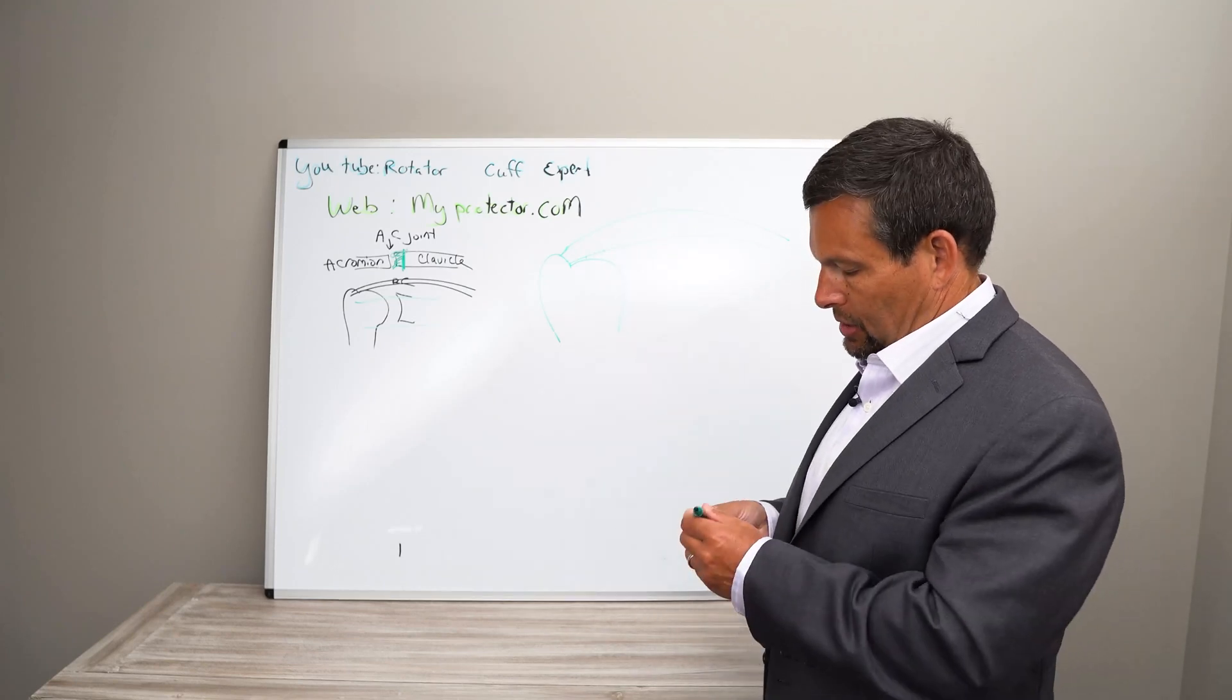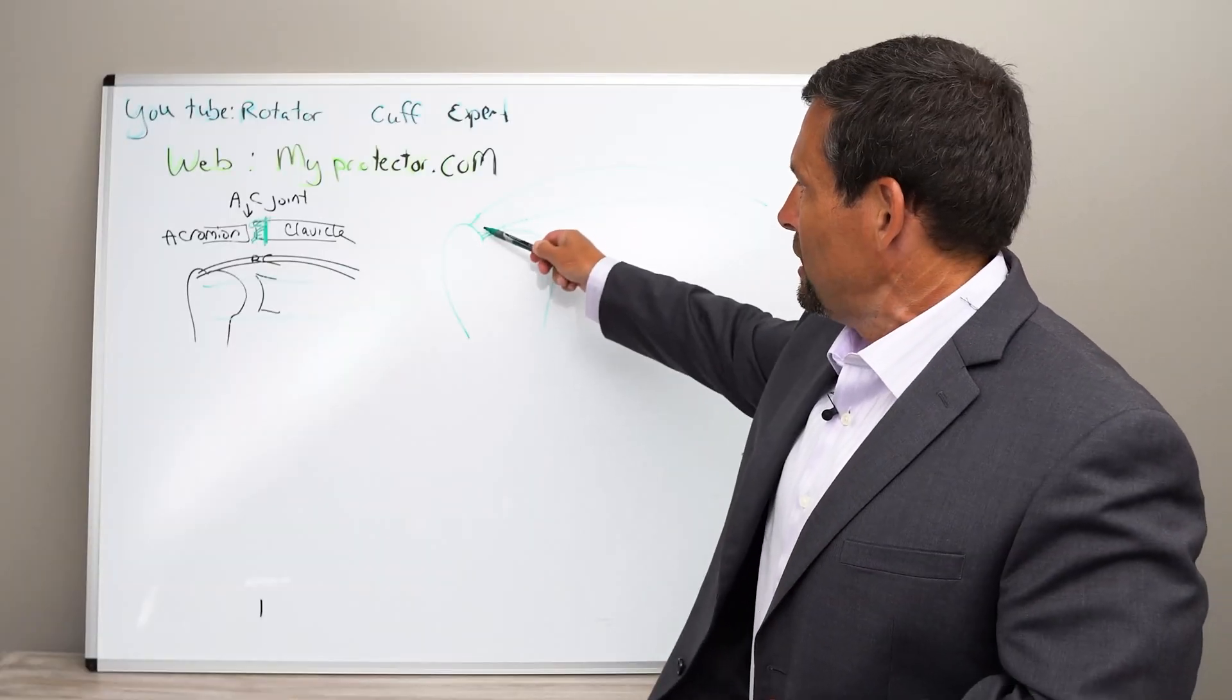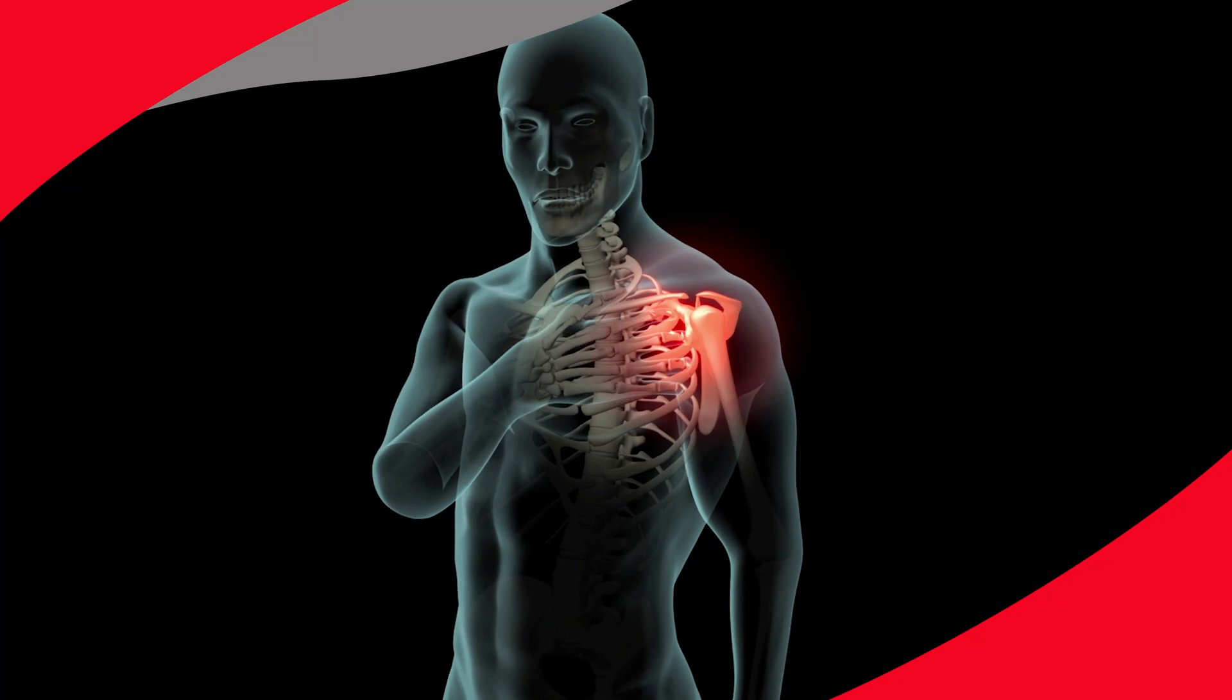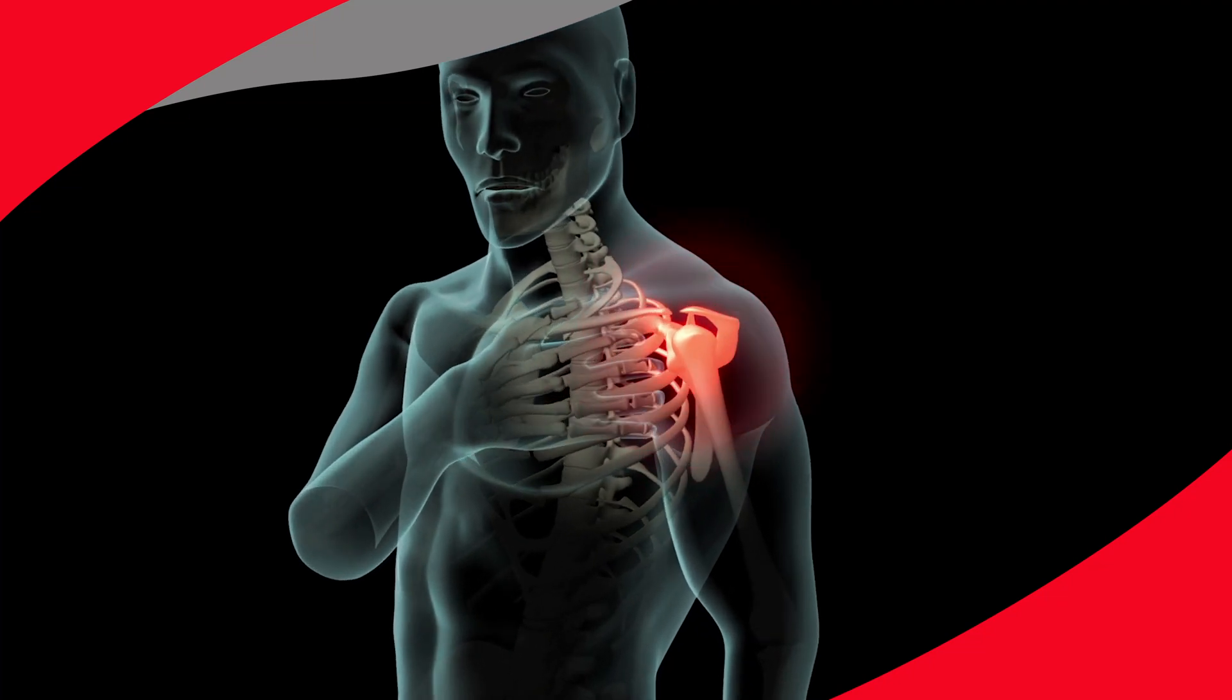So one, we have maybe just irritation. The rotator cuff is really attached, but it's just irritated. So that's grade one, or rotator cuff tendonitis, or rotator cuff irritation.